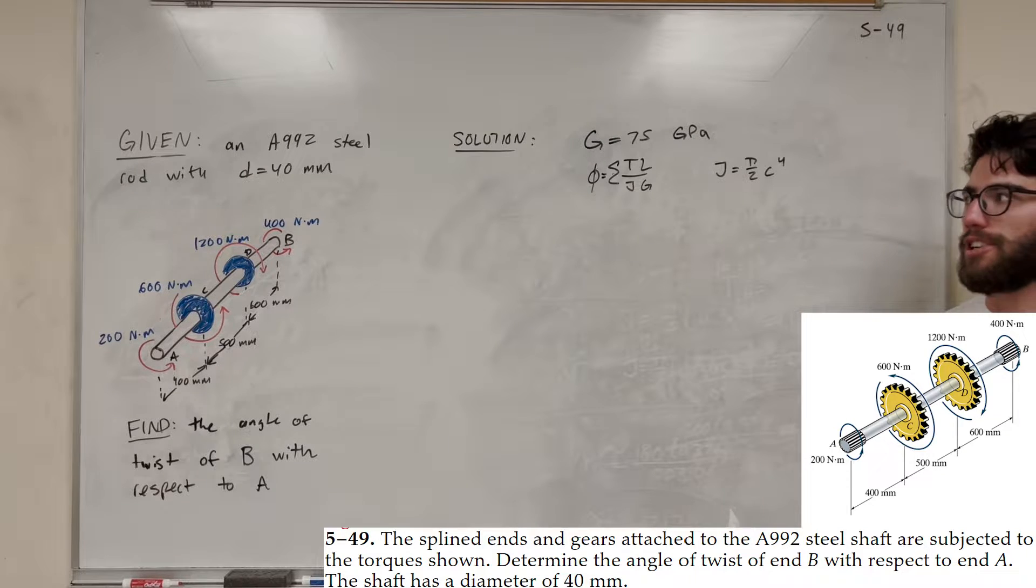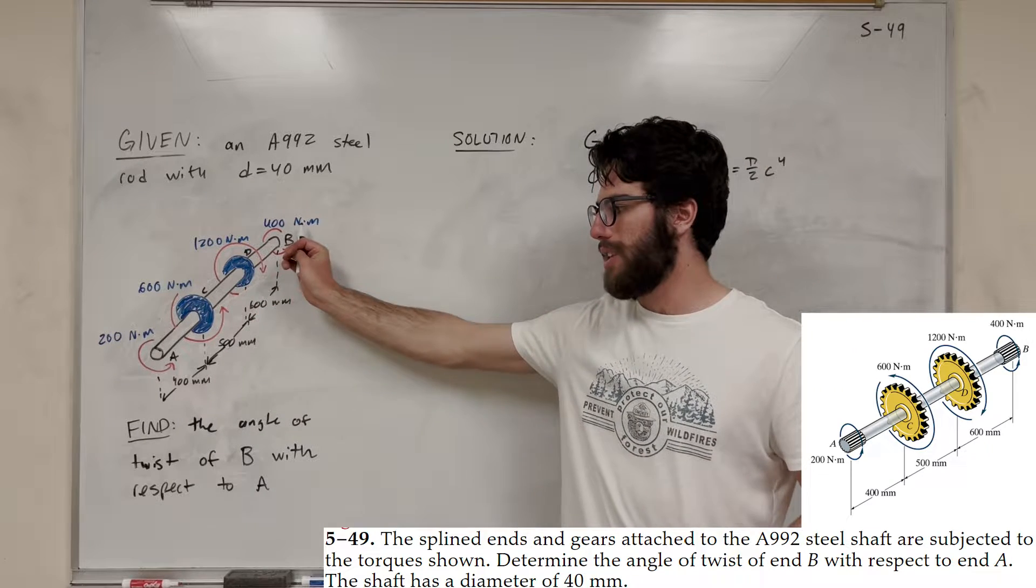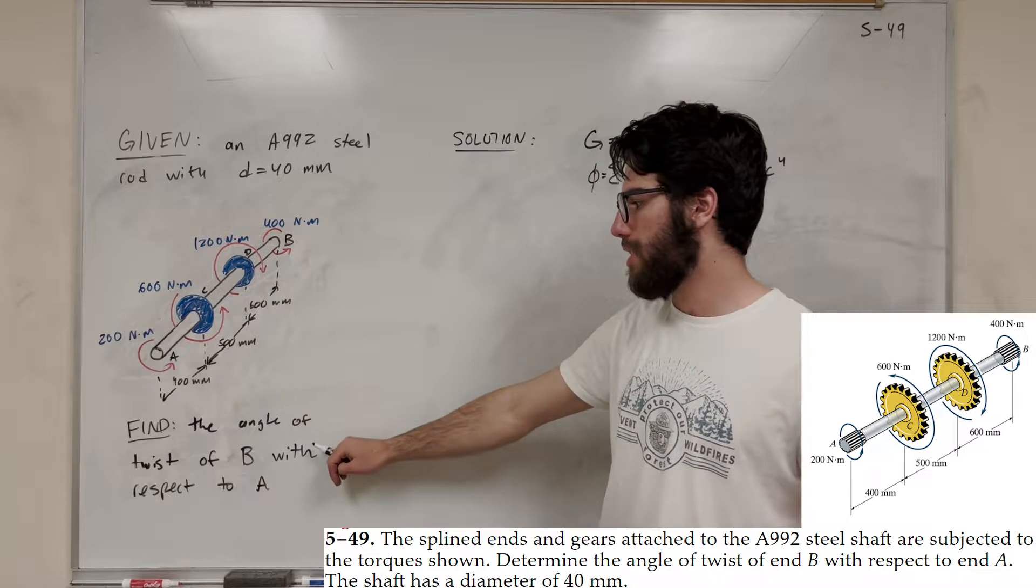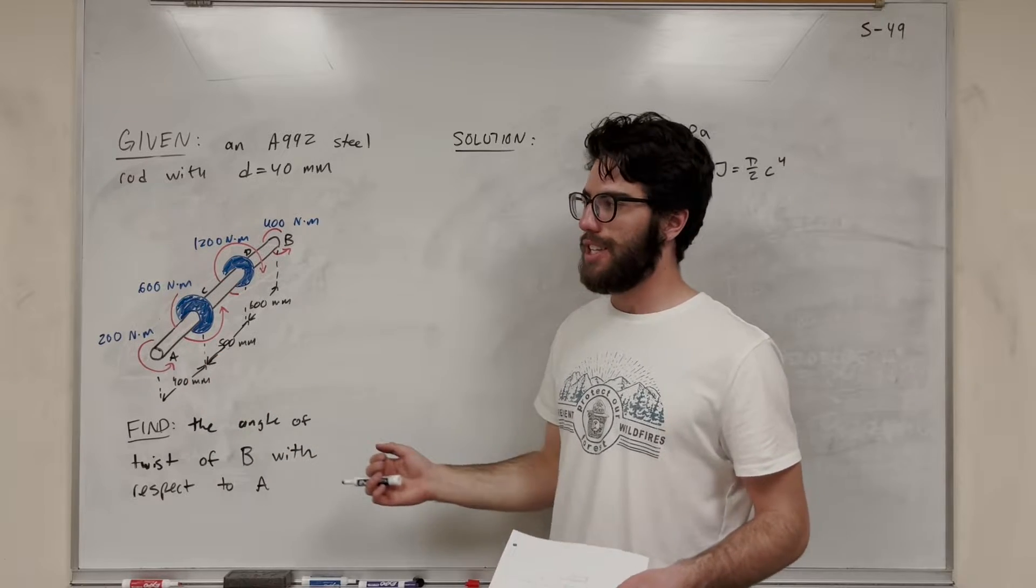What's up, Cal gang? Welcome back to some Mechanics and Materials. So let's solve this problem here. We have this steel rod with all these torques acting on it at these four points, and we want to find the angle of twist of point B with respect to A. So let's go ahead and get started with that.